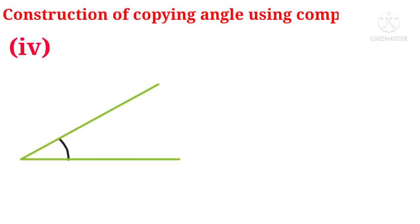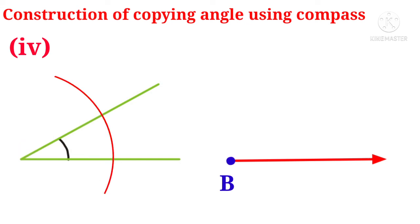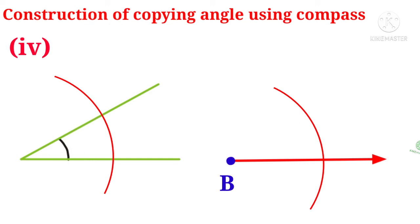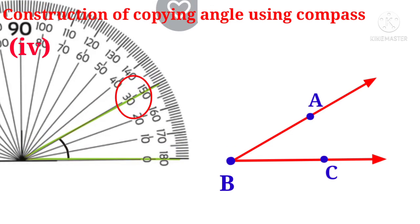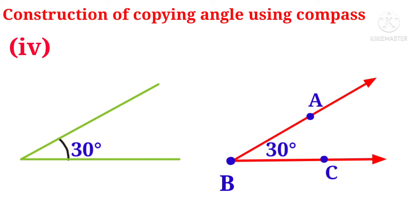Problem figure 4: construction of copying angle. Take a point B and draw a ray through it. Take the compass, put the sharp end at the corner, and with some radius draw an arc on the problem figure. With the same radius at center B, draw an arc with the compass. Take the length of the arc and with this radius draw an arc cutting the previous arc. Intersection points are identified and named A and C, then join B and A with a ray — angle ABC is formed. The problem figure shows 30 degrees and the copied angle also shows 30 degrees — correct copied angle is constructed.